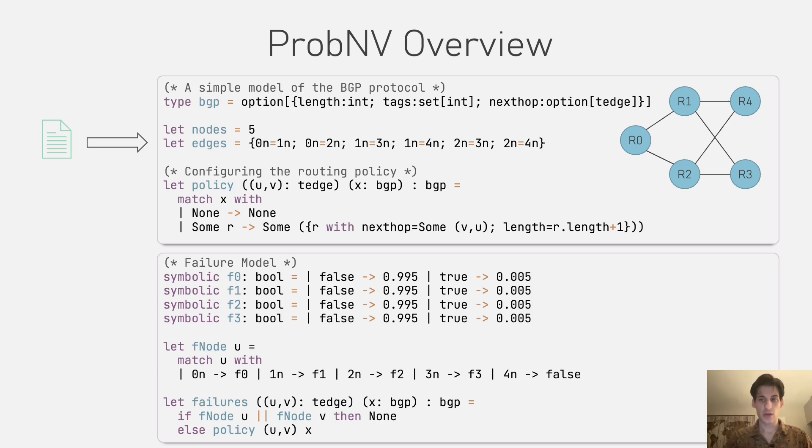The function FNode associates its node with one of the symbolics we declared, except for node 4, which we assume cannot fail.